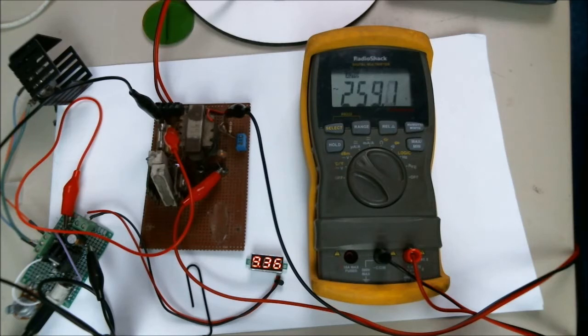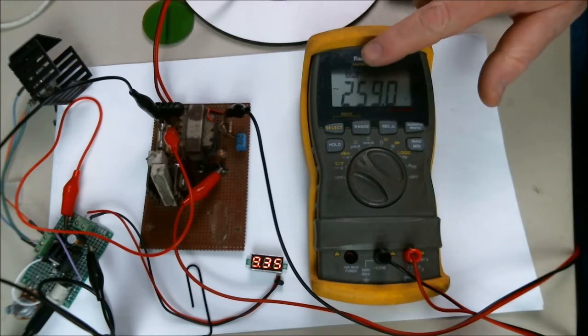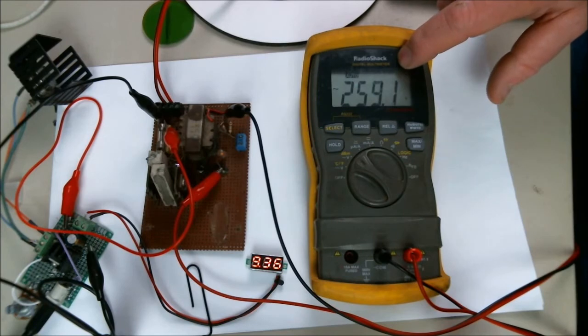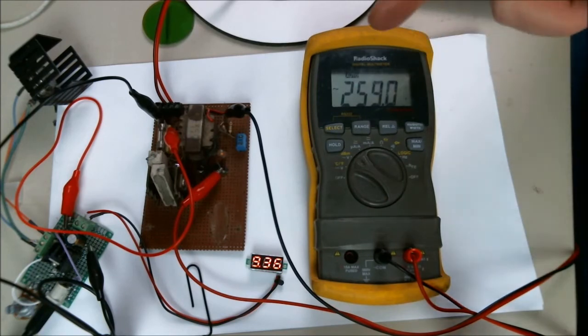Or you can vary the input voltage. Like I said, I'm getting 258 volts out, and remember this may not be 100% accurate. Your volt ohmmeters that you buy are calibrated for 60 hertz. This is a couple of kilohertz.